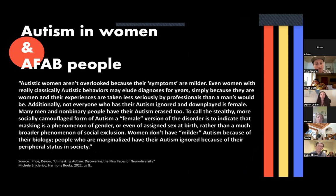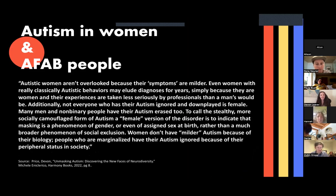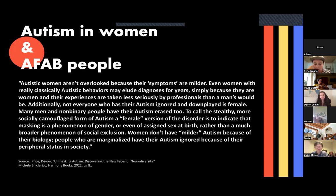I'd love to end this section with a quote from author Devon Price, who wrote Unmasking Autism — a great resource for a nuanced take on the autistic experience. "Autistic women aren't overlooked because their symptoms are milder. Even women with really classically autistic behaviors may elude diagnosis for years simply because they are women, and their experiences are taken less seriously by professionals. Not everyone who has their autism ignored and downplayed is female — many men and non-binary people have their autism erased too. To call the more socially camouflaged form of autism a 'female version' of the disorder is to indicate that masking is a phenomenon of gender rather than a much broader phenomenon of social exclusion."